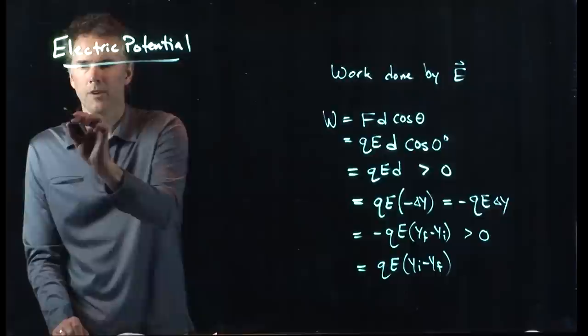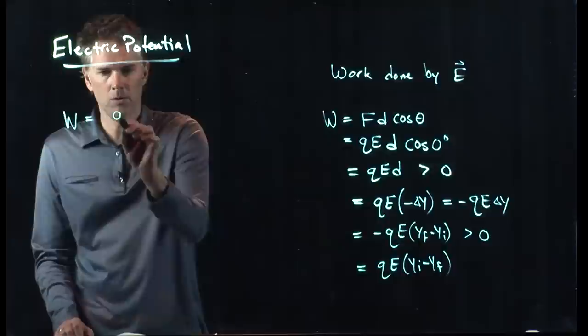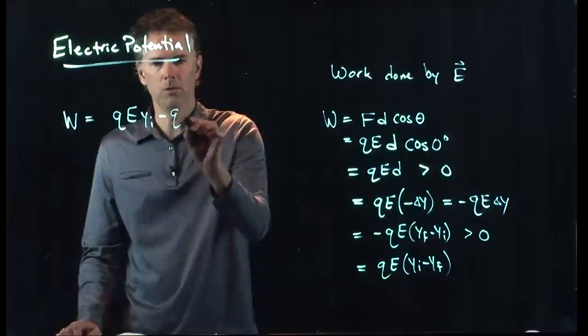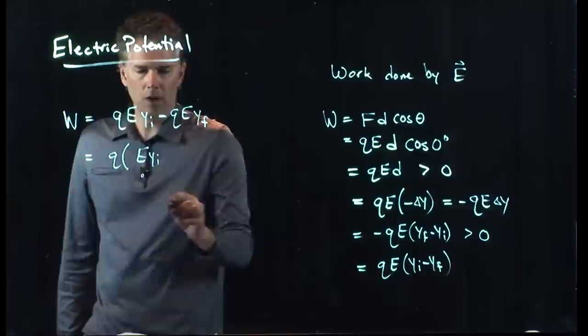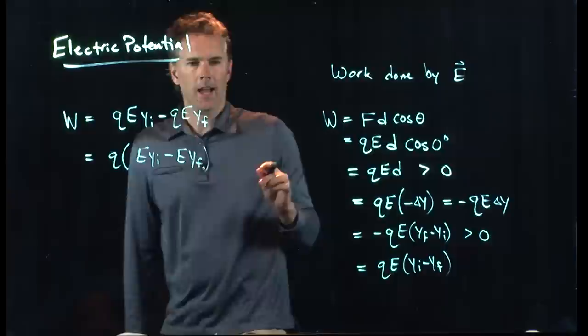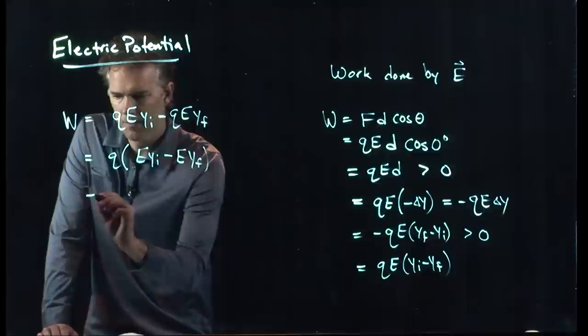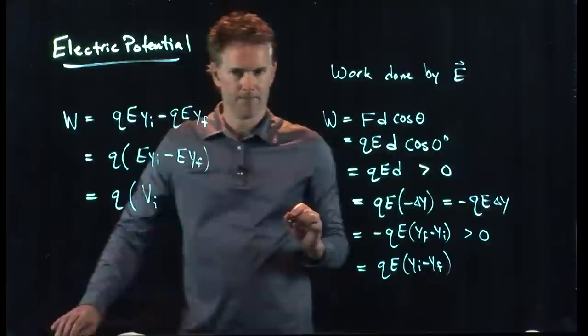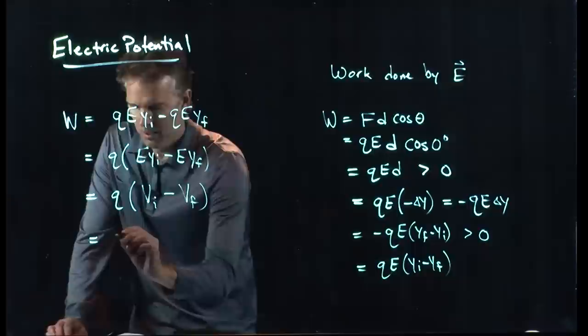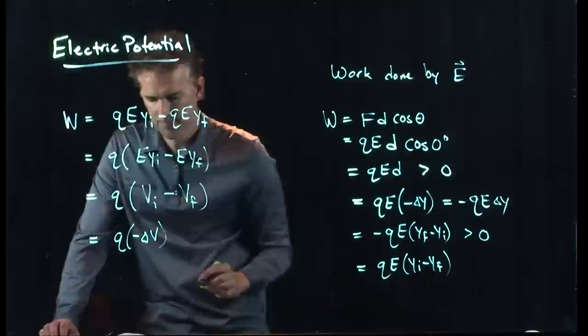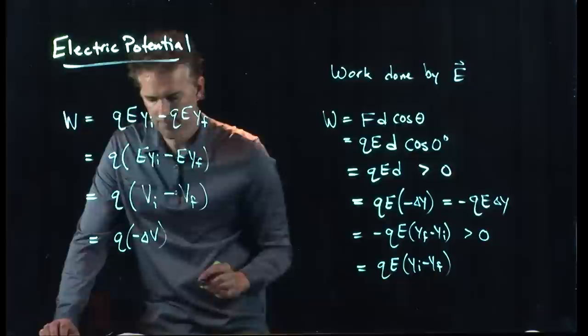Rewriting: W = QE·Y_initial minus QE·Y_final. Pulling out Q from both terms gives Q times (EY_initial minus EY_final). Now we make the key substitution: we call EY_initial as V sub I and EY_final as V sub F — and this V is our electric potential. So the work becomes Q times (V_I minus V_F), which equals negative Q delta V. This is where we introduce the electric potential V.